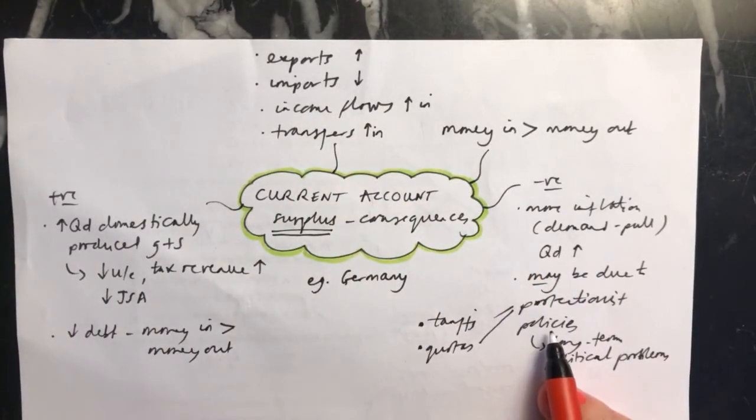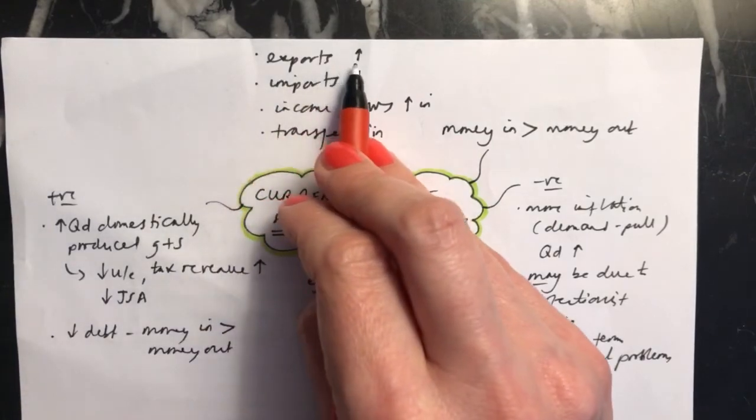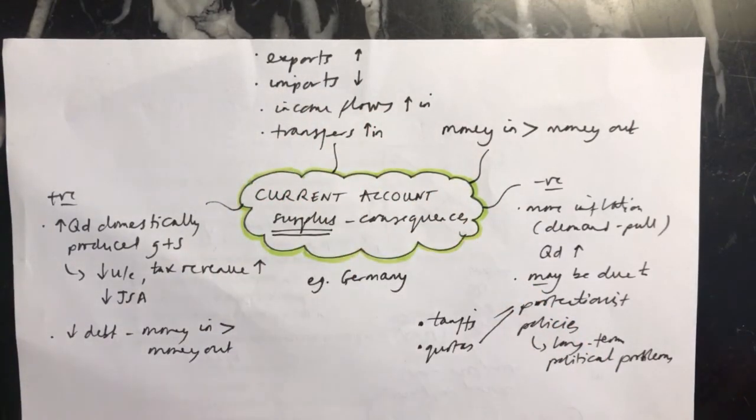If these protectionist policies have been put in place, in the long term, the countries that they have been put in place against may retaliate and therefore your country might not be able to export so much in the longer term. So actually, this increase in exports may stop and reverse.